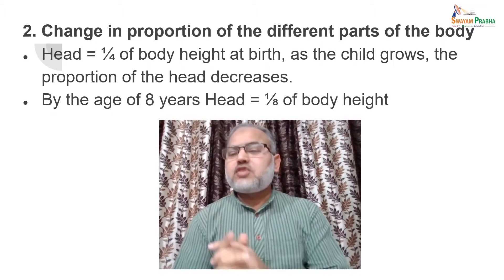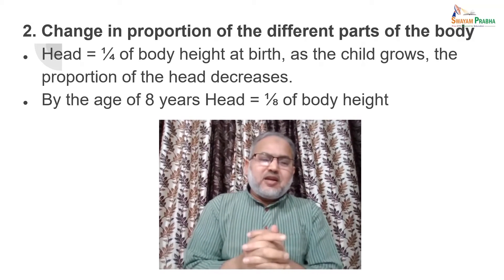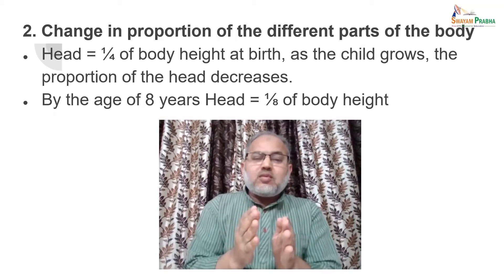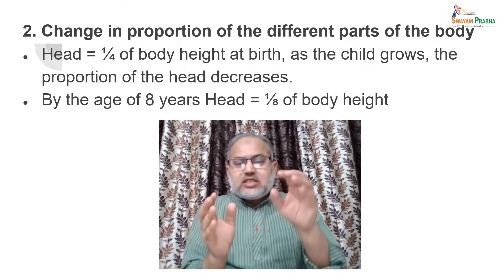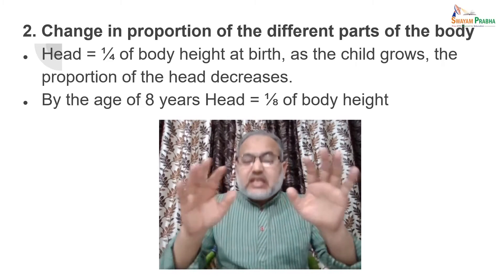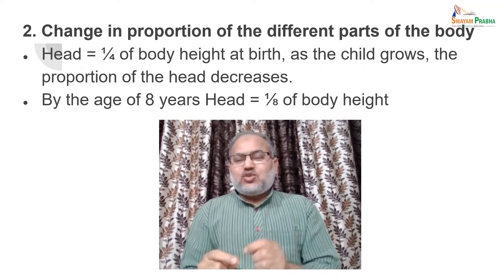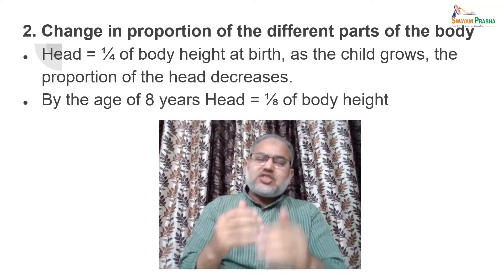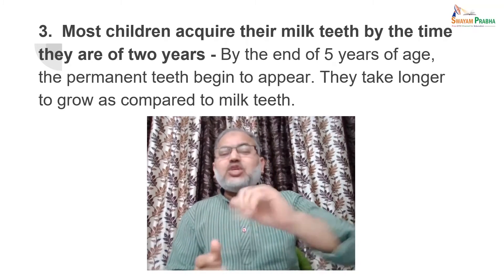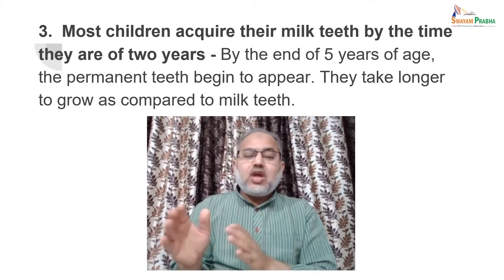Regarding change in body proportions: the newborn baby's head is one-fourth of body height at birth. As the child grows, the proportion of the head decreases, and by the age of eight years, the head is equal to one-eighth of body height. Most children acquire their milk teeth by the time they are two years old. By the end of five years, permanent teeth begin to appear, taking longer to grow than milk teeth.